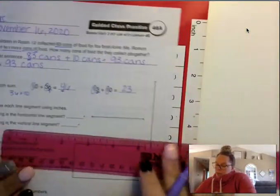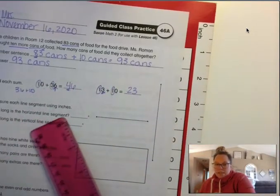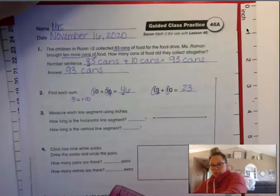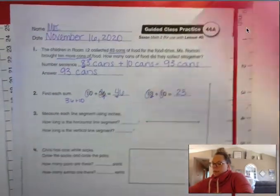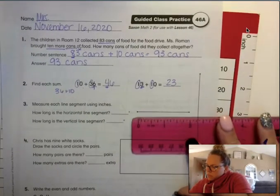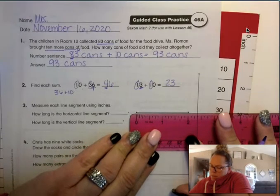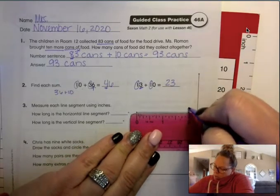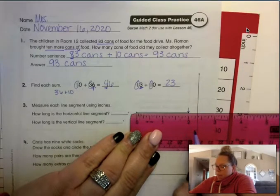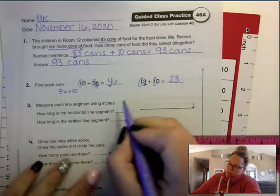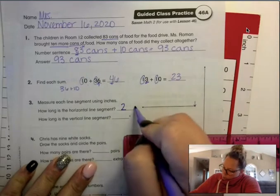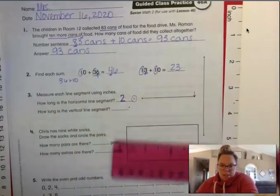So we're going to start at 0 and find how long the horizontal line segment is. I'm going to turn my paper to the side a little bit here. So I'm starting at 0 and I'm stopping where my other point is for my line segment. And you can see that I have 2 inches. That's the horizontal so I'm going to write a 2. Do I need to write inches? Nope, because you see those 2 little dashes. Remember, that is inches.